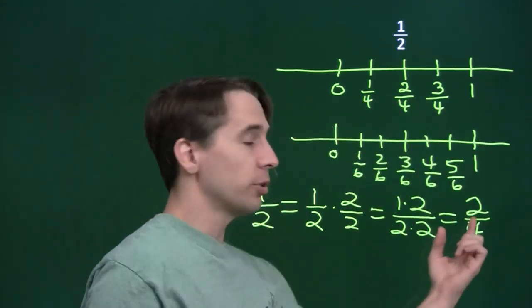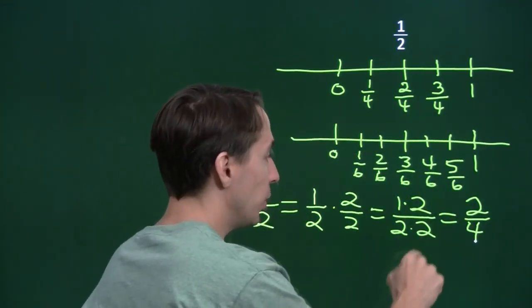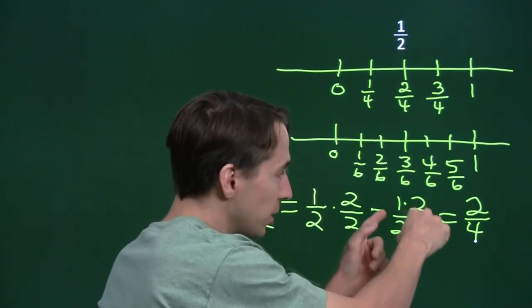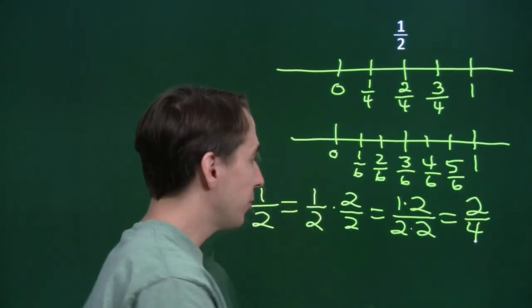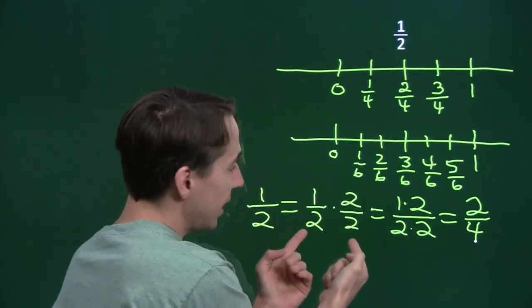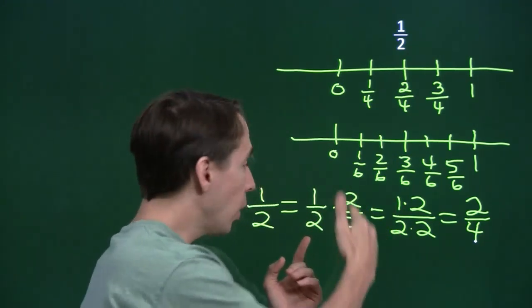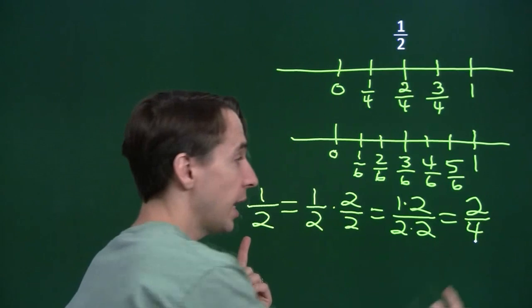Now, when we go in the other direction, we start with 2 over 4, and we write the top as 1 times 2 and the bottom as 2 times 2. What we're doing here is we're taking out the common factor that 2 and 4 have. They have the common factor 2. We separate that into its own fraction. 2 over 2, of course, is 1. That goes away and we're left with 1 half.